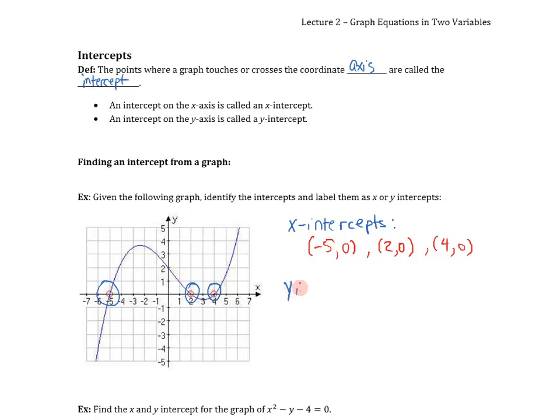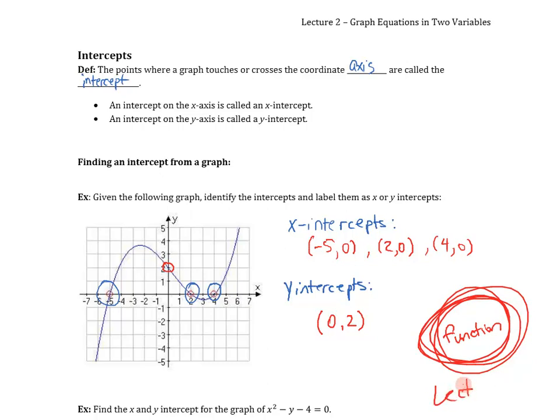What are our y-intercepts? That would be just this point right there, which is the coordinate 0, 2. Now, I made a comment earlier that I want to come back to. I mentioned that the functions that we work with are actually going to have only one y-intercept. And the reason why comes back to this concept of a function, which we're going to come back to in a later lecture. In fact, it's lecture 4, a review of functions. Now, what if we're not given the graph? Look at the next example where it asks us to find one where we're given the equation.